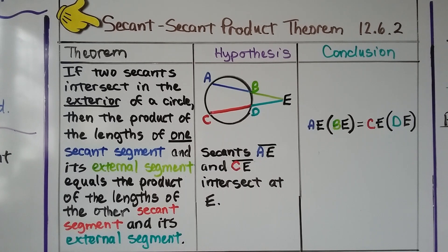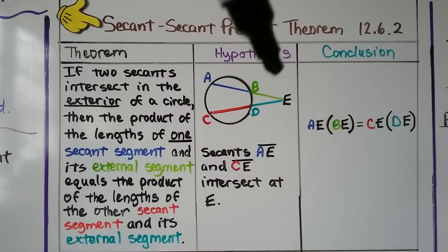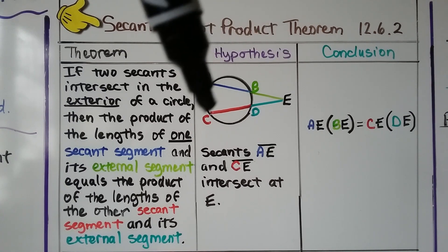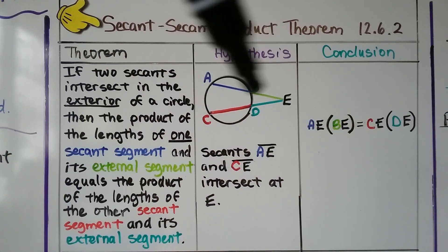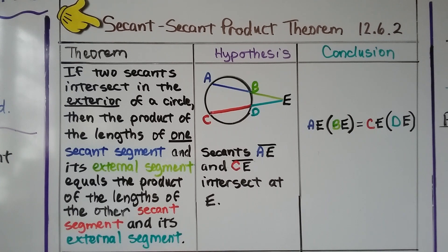Our conclusion is that AE, this entire secant segment, times its external segment BE is going to be equal to this entire secant segment CE times its external segment DE.